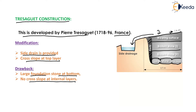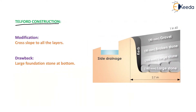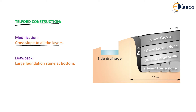Now we move to Telford construction. The remaining things are similar to Tresaguet and Roman development with a slight modification. In Telford construction, cross slopes are provided to all layers, making the drainage system more effective. The drawback of Telford construction is still the large foundation stones at the bottom, similar to Roman and Tresaguet construction. The slope provided at the top layer in Telford construction is 1 in 60.